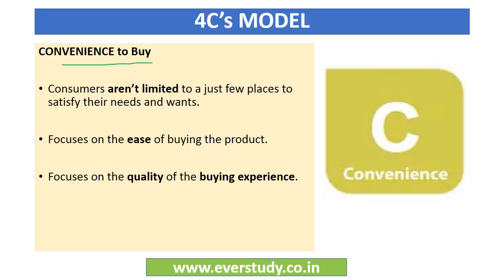The next C is convenience to buy, which is about access to the product. Gaye wo din jab mammi papa ke saath ghanton lagte the shopping karne mein — traveling to the shop, items dhundna, then line mein lagke bill pay karna. Today, a customer is not bound to buying from a physical location and is not limited to few places — options kaafi sare hain, especially online. Convenience focuses on ease of buying and the quality of the buying experience. For example, Big Basket makes buying grocery, daily need products, and vegetables kaafi easy and convenient.